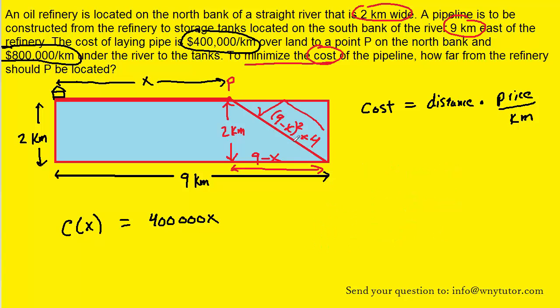Now we can establish an expression for the cost of the pipeline going across the river. Remember, cost is distance times the price per kilometer. We have a distance labeled here, and the price per kilometer across the river was $800,000. So we can fill in the cost going across the river right here. We can actually simplify underneath the radical by foiling out the 9 minus x and then combining like terms.